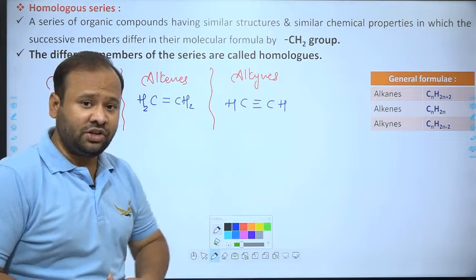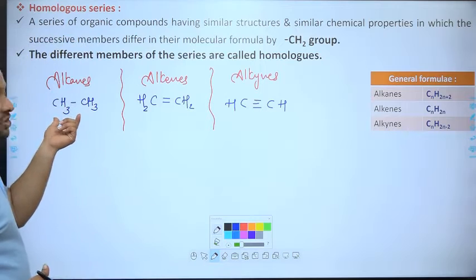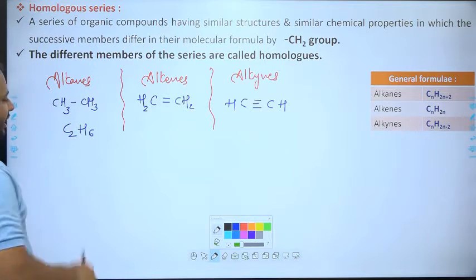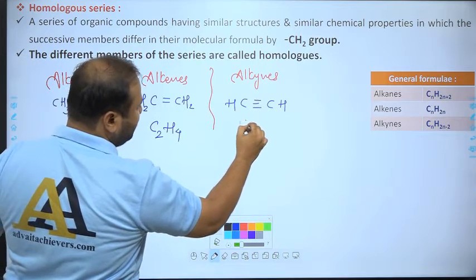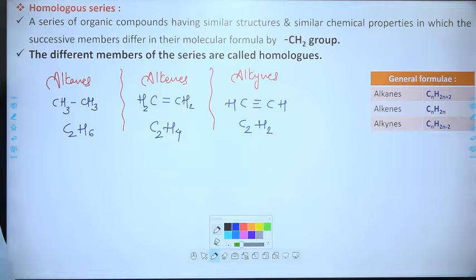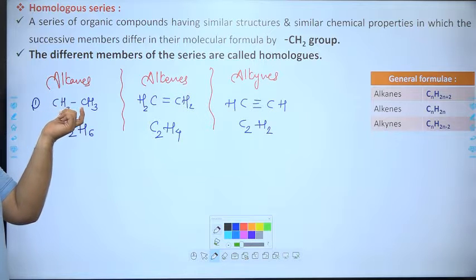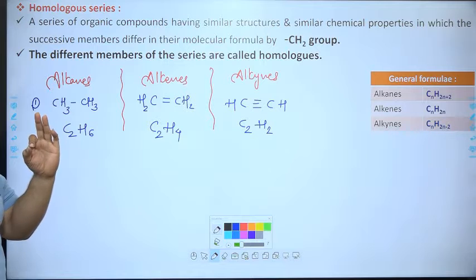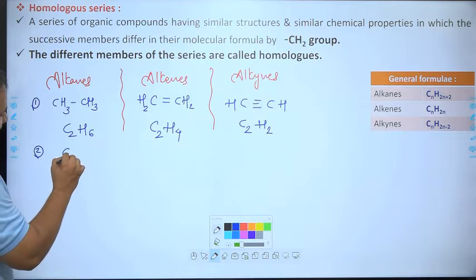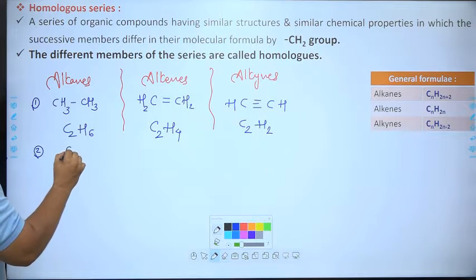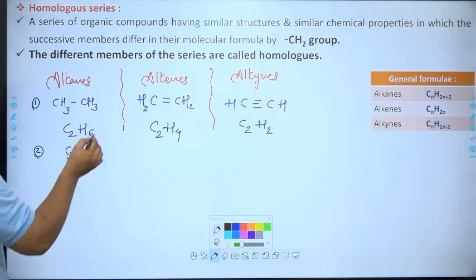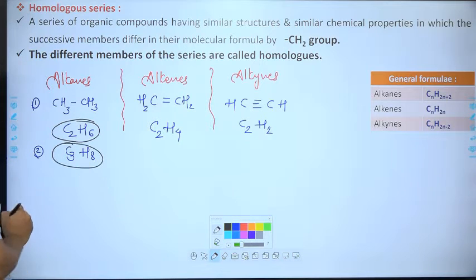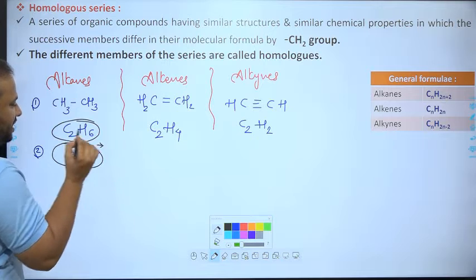Pay attention now. For alkanes: C2H6. For alkenes: C2H4. For alkynes: C2H2. For the alkane series, the second member is ethane (2 carbons), the third is propane (3 carbons) written as C3H8. Now check the difference between C2H6 and C3H8.